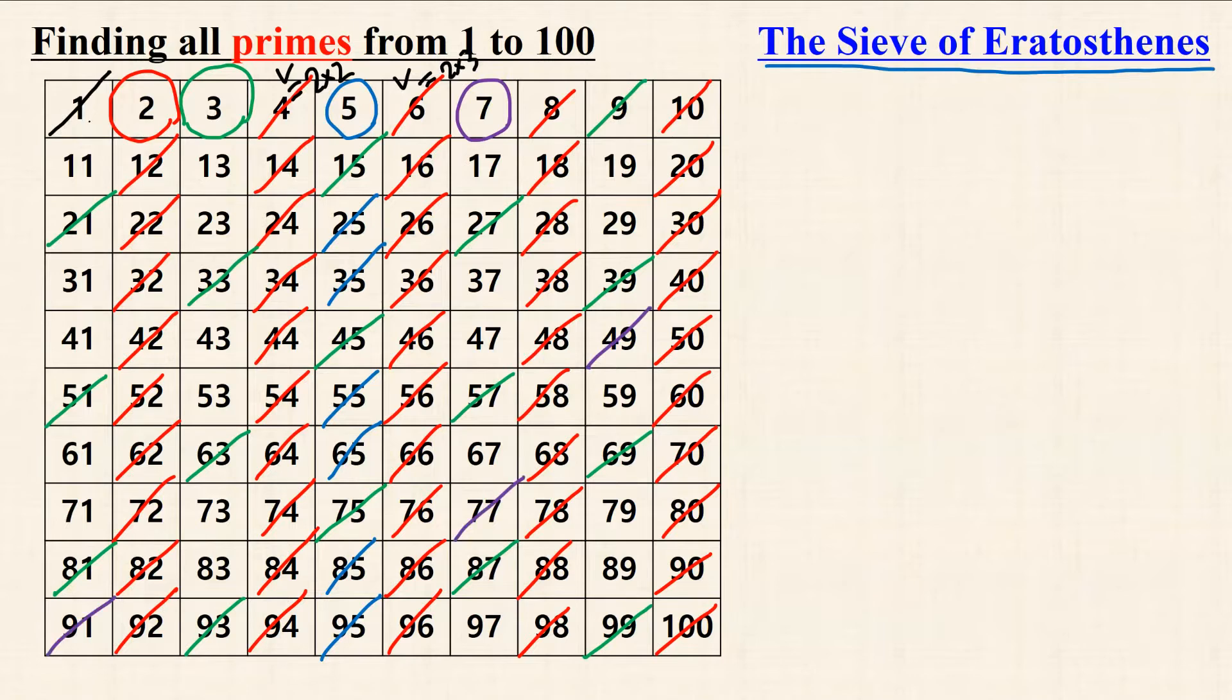Okay, now if we find the next undeleted number, it is 11. But we don't need to check multiples of 11 at all. Actually, when using the sieve of Eratosthenes to find all prime numbers up to a natural number n, we only need to check up to square root of n, in this case, square root of 100, which is 10.